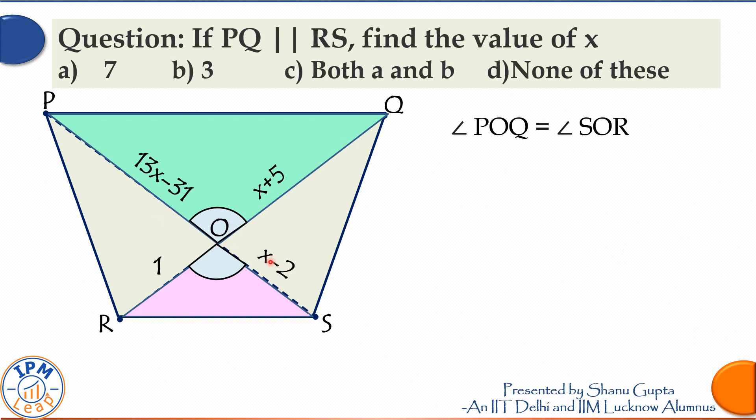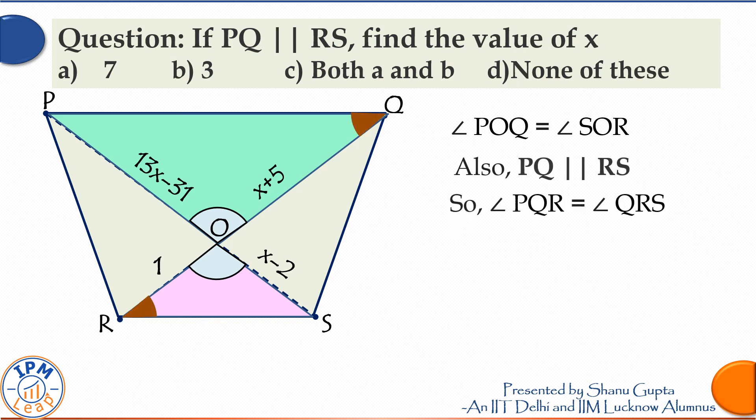because these are opposite angles created by the intersection of the two diagonals. Also, PQ is parallel to RS, so if we take QRS as a transversal, then angle PQR is equal to angle QRS. These two shown in brown are alternate interior angles.